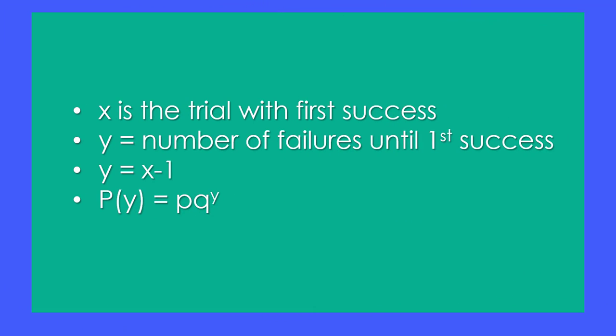After doing a lot of digging, I found out that there's an alternate form of the geometric distribution formula. And in that alternate form, we're looking at the number of failures until the first success, where y is equal to x minus 1. If x is equal to 3, the first success occurs on trial 3, then y is equal to 2. And the probability of y is equal to p times q to the y. And that makes sense.